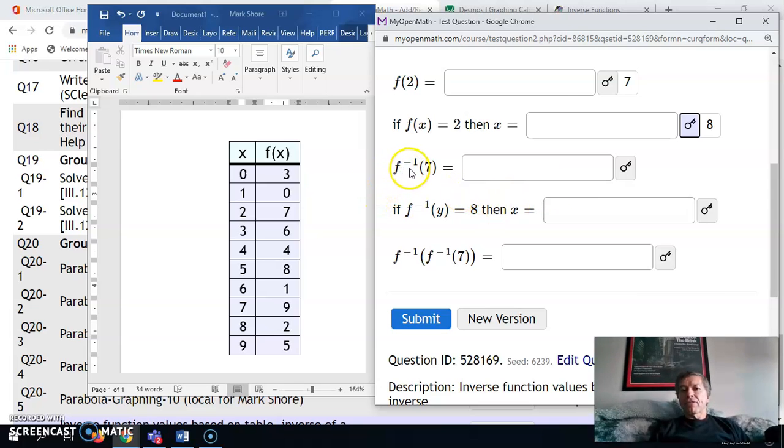This says f inverse. This little negative 1 here is read inverse. So this means instead of going left to right, we're going right to left. f inverse of 7, what we're doing here is looking for 7 on the right-hand side. Then, what is the x value over here that corresponds to that? Well, that would be 2. Again, when you see f inverse, that means we're starting on the right-hand side.